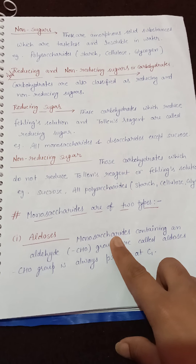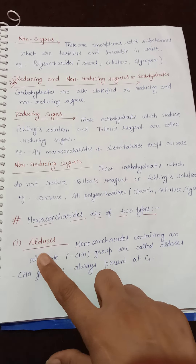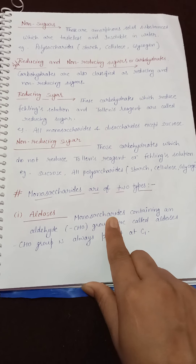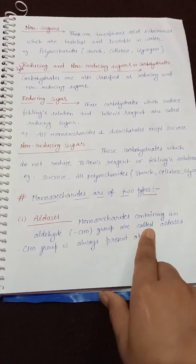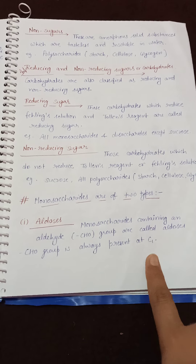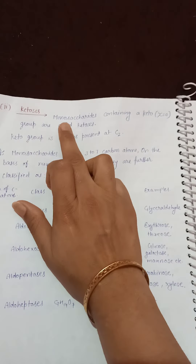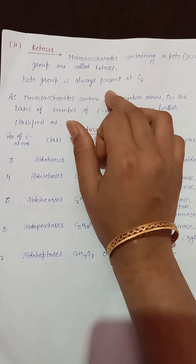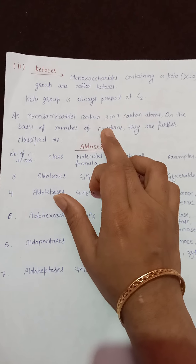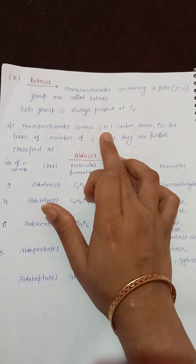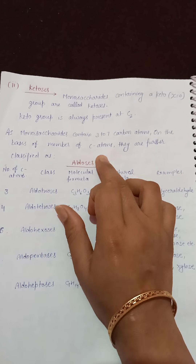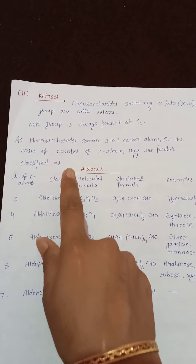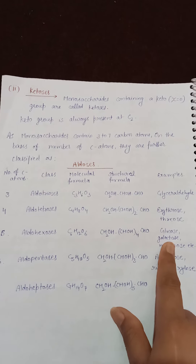Monosaccharides are further classified into aldoses and ketoses. Aldoses are monosaccharides containing an aldehyde group (–CHO), always present at the first carbon. Ketoses are monosaccharides having a keto group (C=O), always present at the second carbon. Since monosaccharides contain 3 to 7 carbon atoms, aldoses and ketoses are further sub-classified based on the number of carbon atoms.